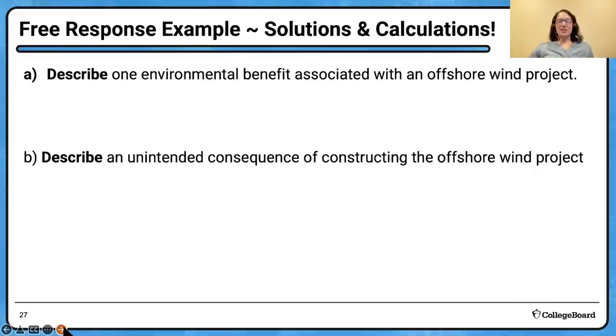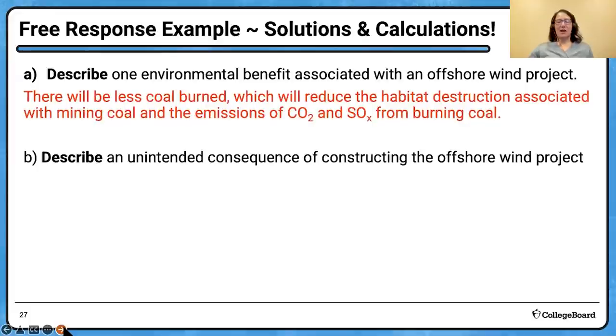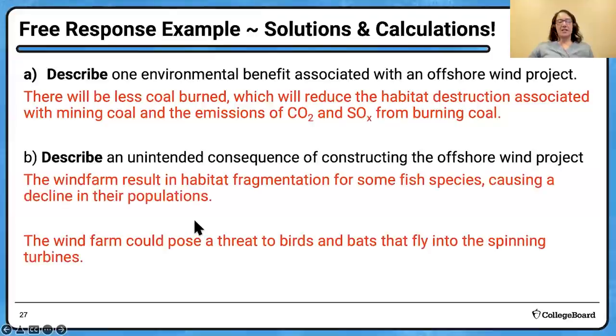Let's look at the response to the two introductory questions. Describe an environmental benefit of an offshore wind farm: there will be less coal burned, which will reduce the habitat destruction associated with coal mining, and the emission of carbon dioxide and SOX. Any of those responses would be appropriate. Describe an unintended consequence. The wind farm would result in habitat fragmentation potentially, causing a decline in the population of the fish because it's offshore, or the wind farm could pose a threat to birds or bats that fly into the spinning turbines.